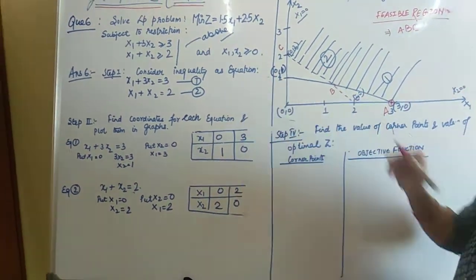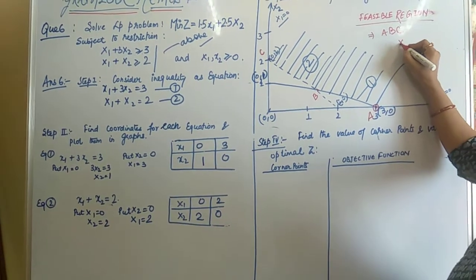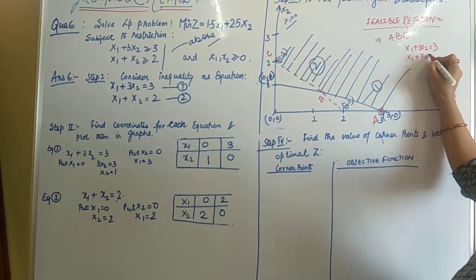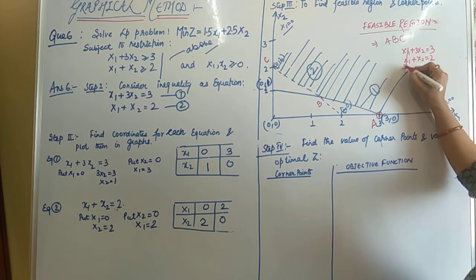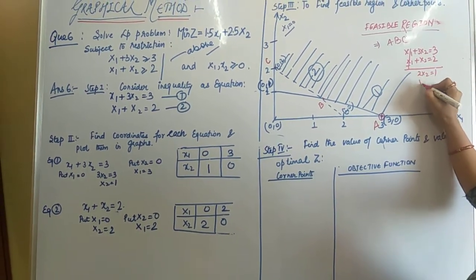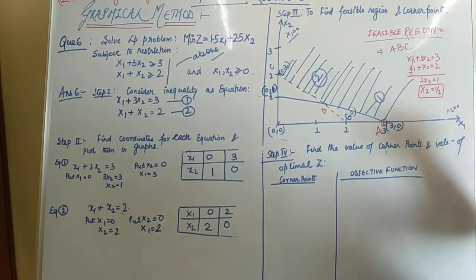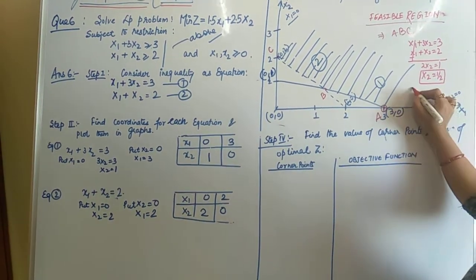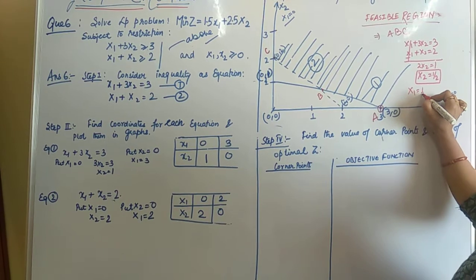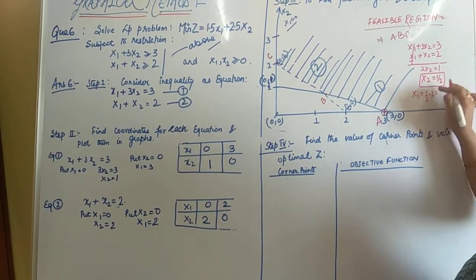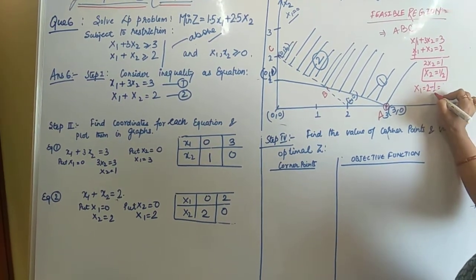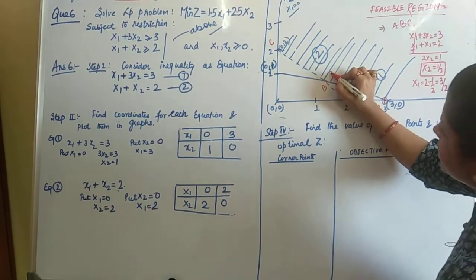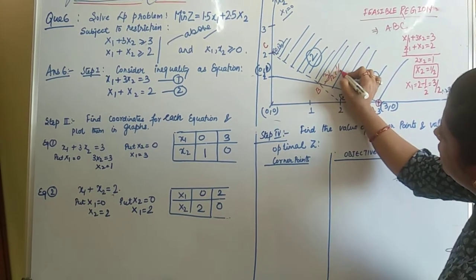Now solving the two equations simultaneously to find point B. The equations are x1 plus 3x2 equals 3 and x1 plus x2 equals 2. Solving, we get x2 equals 1/2. When x2 equals 1/2, putting back into equation 2, x1 equals 2 minus 1/2 equals 3/2. So point B is (3/2, 1/2).